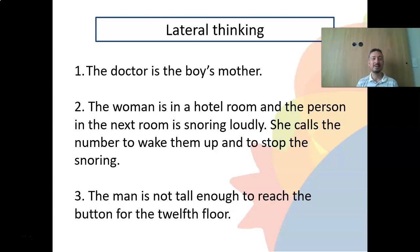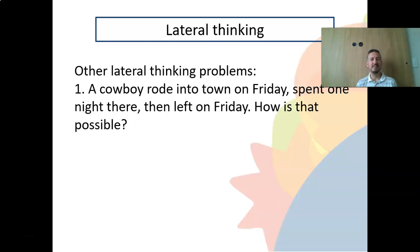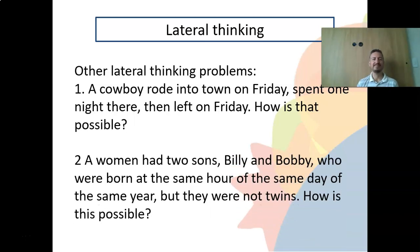Here are some more lateral thinking problems for you. First: a cowboy rode into town on Friday, spent one night there, and then left on Friday. How is that possible? Second: a woman had two sons, Billy and Bobby, who were born at the same hour of the same day of the same year — but they were not twins. How is this possible?